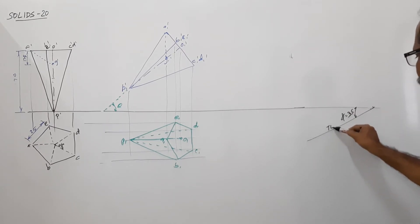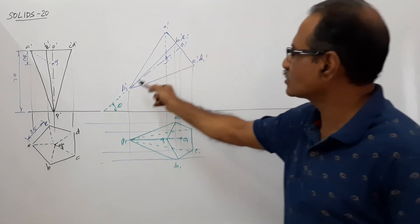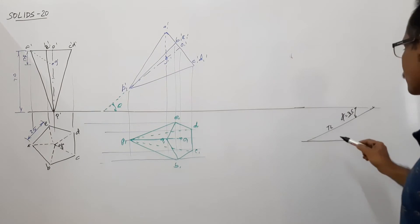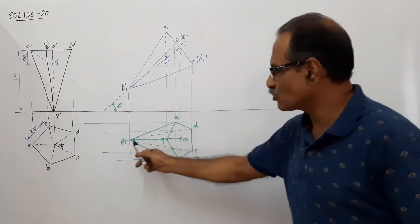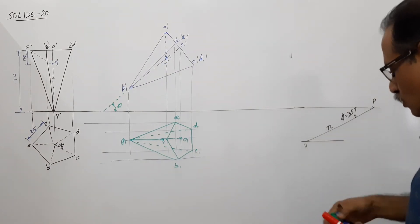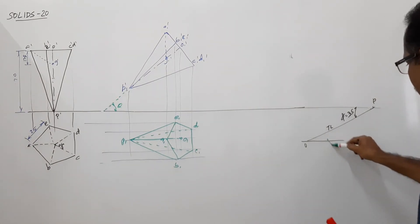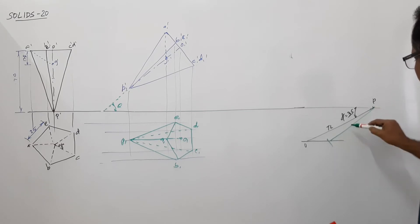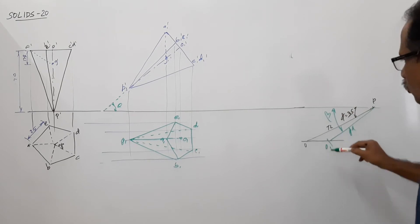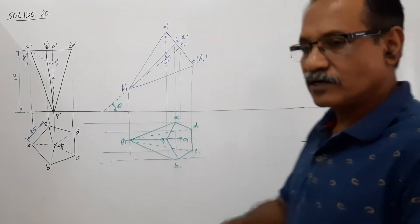This is TL of axis. The true length of axis is this. Draw a locus. Take the plan length of axis. Plan length of axis is P1 O1. P O, P1 O1, cut an arc. This is PL and this angle is called beta. This is O. You have calculated beta.